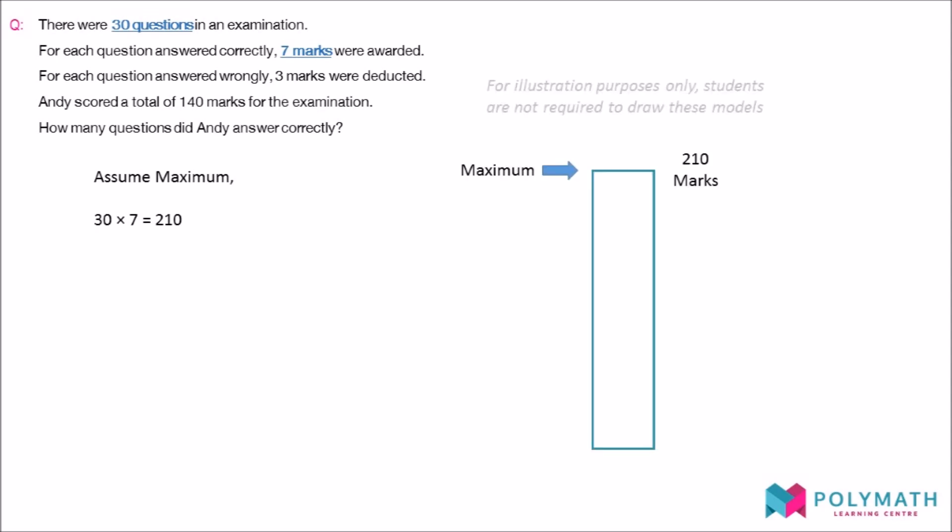However, we know that it is not possible that Andy had obtained 210 marks, as the question says that Andy scored only 140 marks.